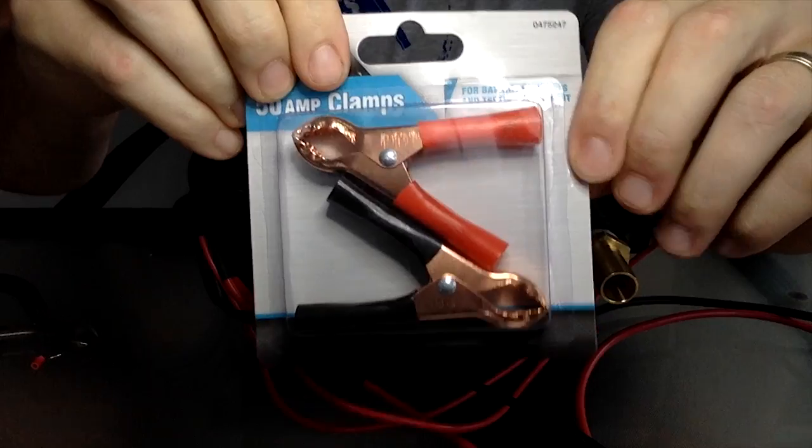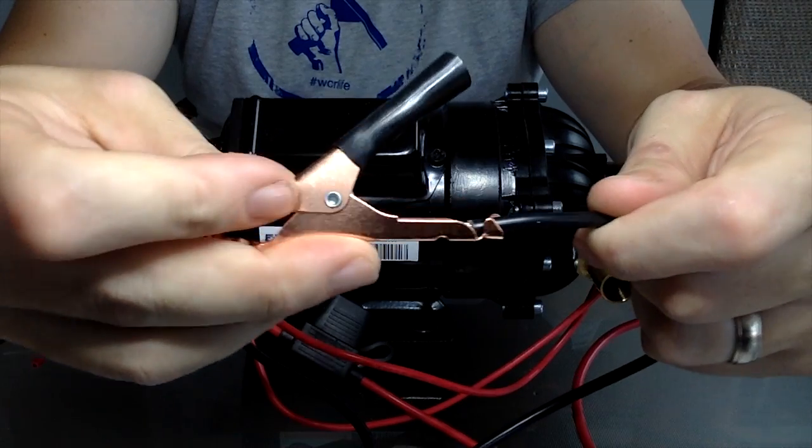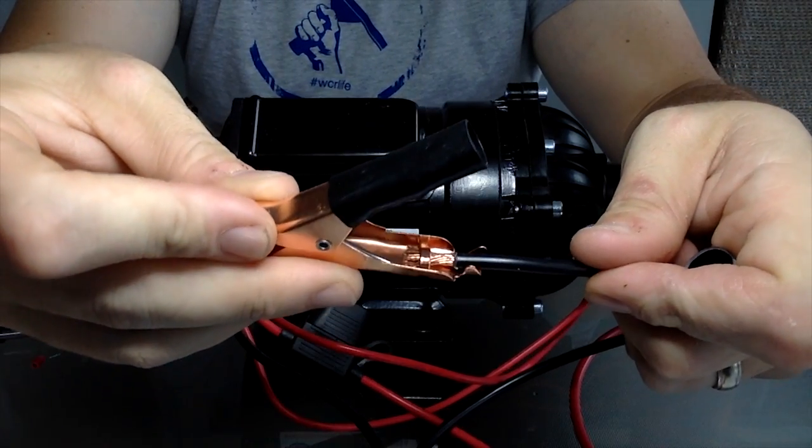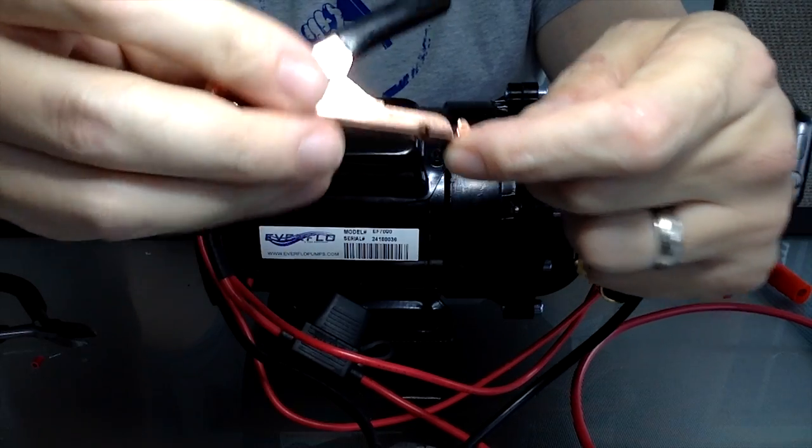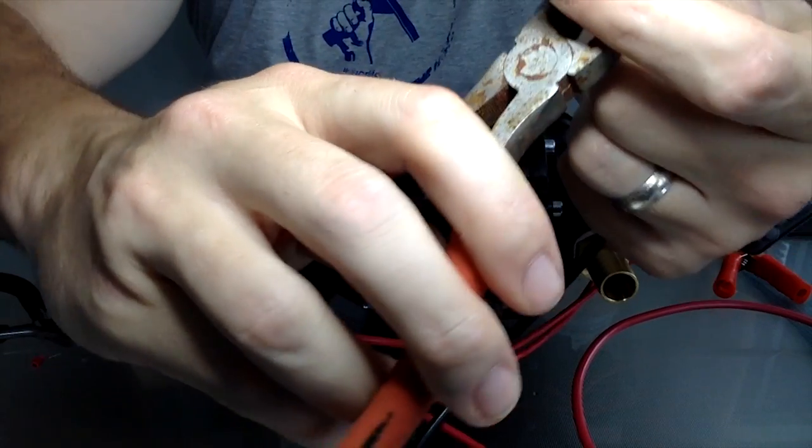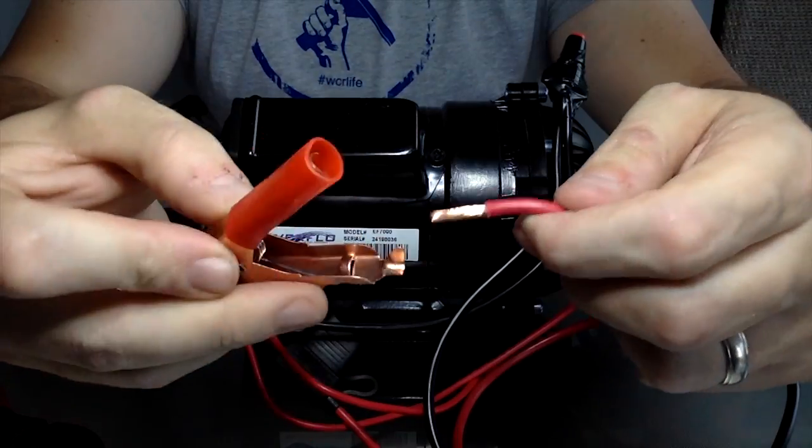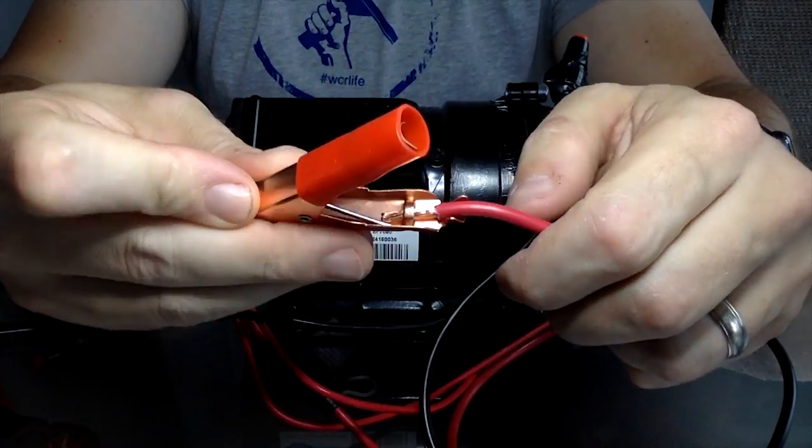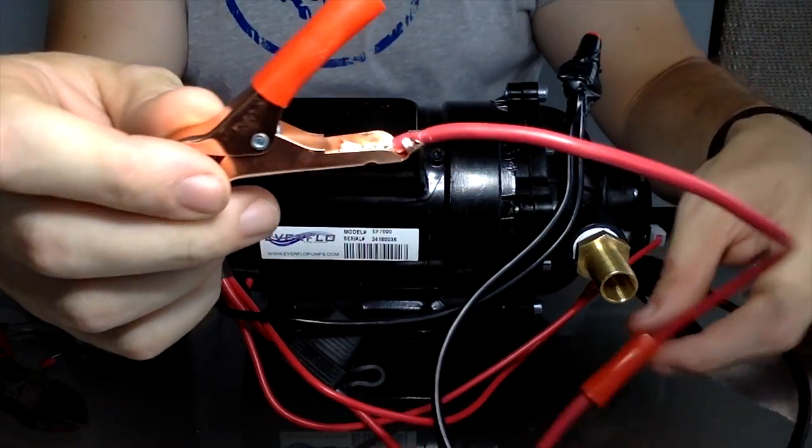Then, if you're going to be connecting it directly to a battery, get a set of alligator clamps and crimp those into the new section of wire. Do that for the positive and the negative. Slide the sleeve back on to protect it.